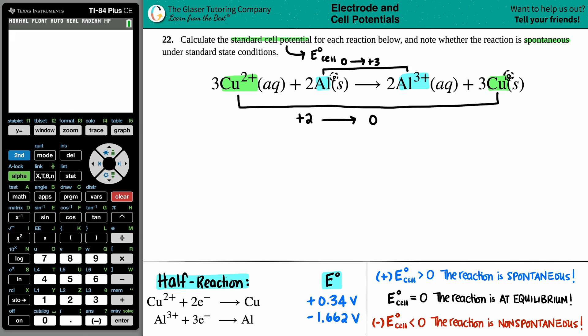Now notice how I don't even care about how many I have. I don't care that I have 3 copper, I don't care that I have 2 aluminum, 2 aluminum here, or 3 copper. The coefficients mean nothing when we're dealing with standard cell potentials. But now where do I go with this information? What is the formula to find E cell?